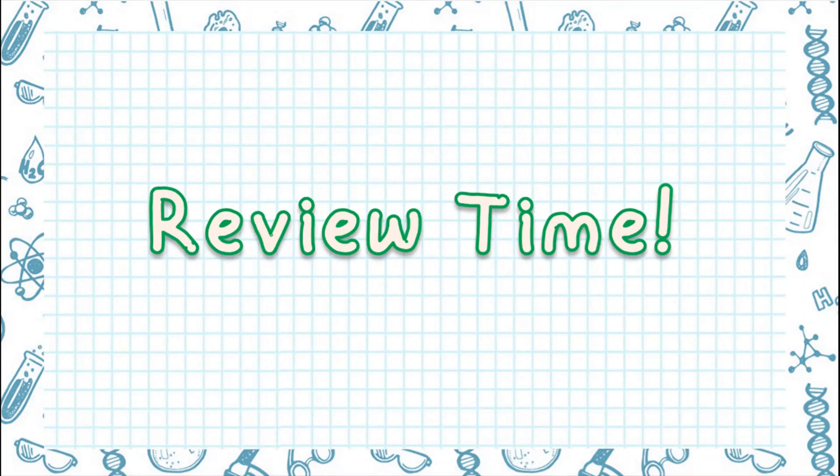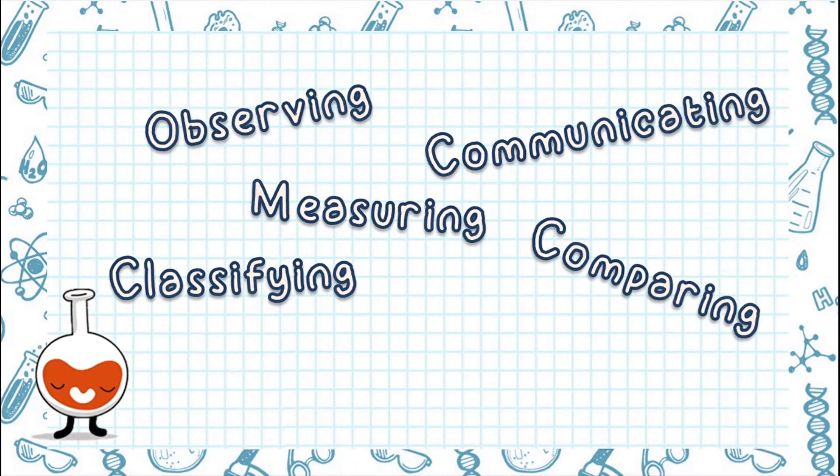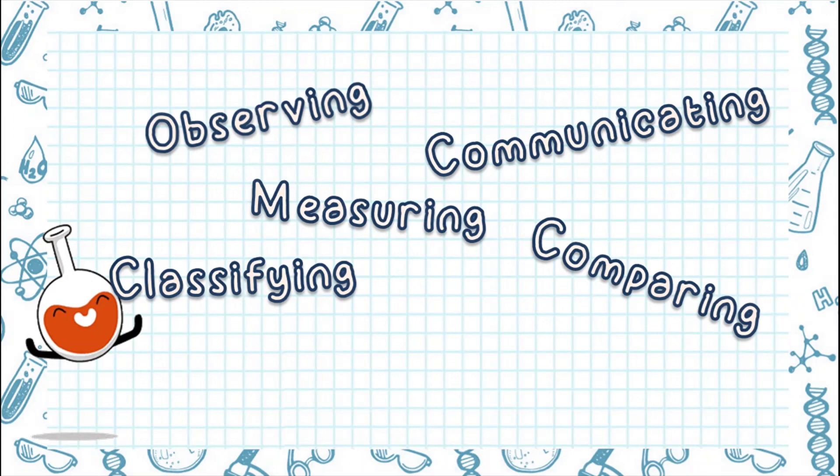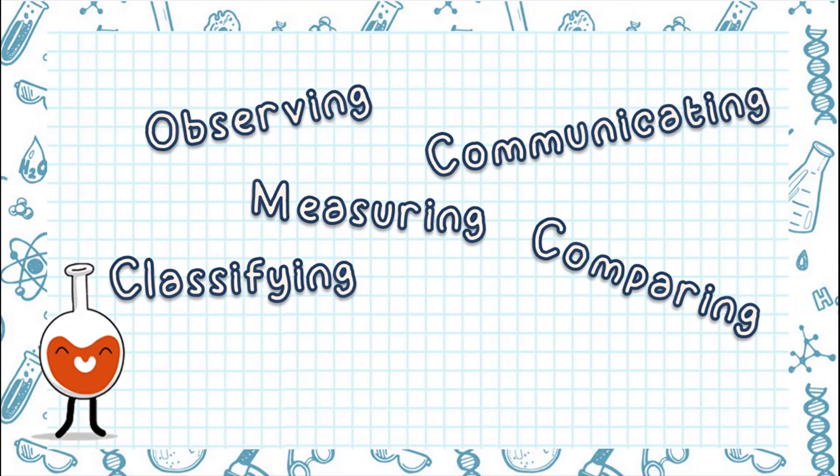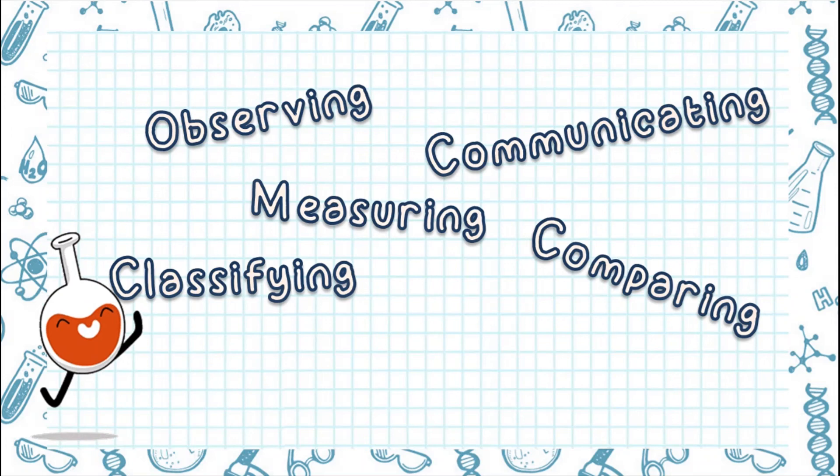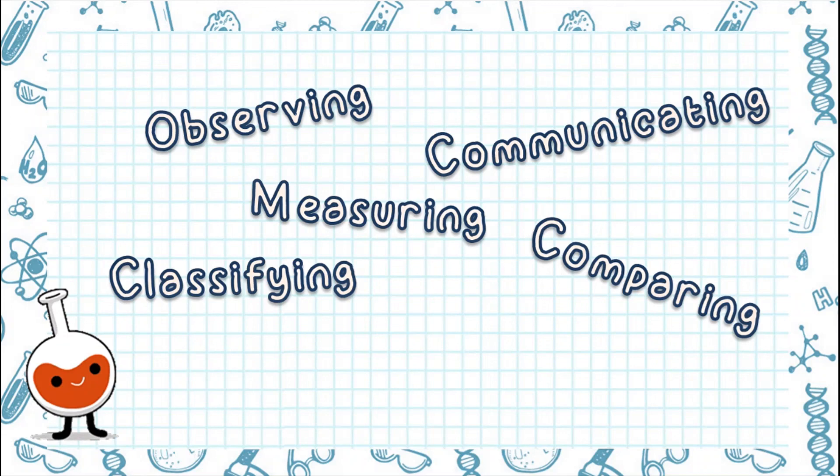Now let's review! Scientists use inquiry skills to answer questions about science. These skills are observing or gathering data using the senses, communicating or writing down, drawing, or presenting data to show others, measuring, or getting data from objects using measuring tools, comparing, or seeing how two things are alike or different, and classifying, or grouping similar things together.